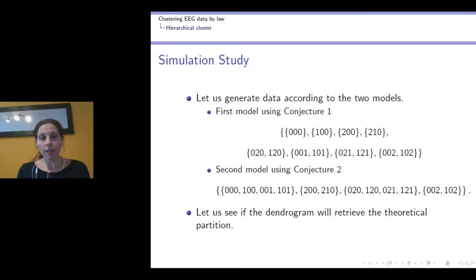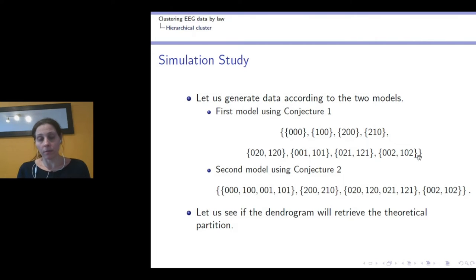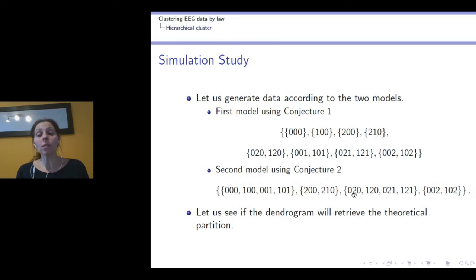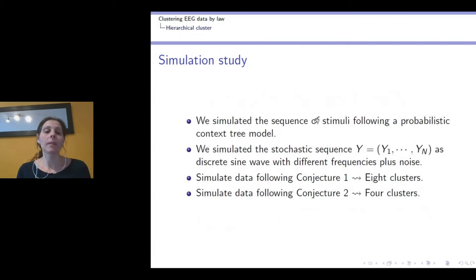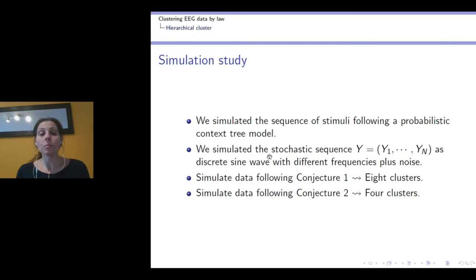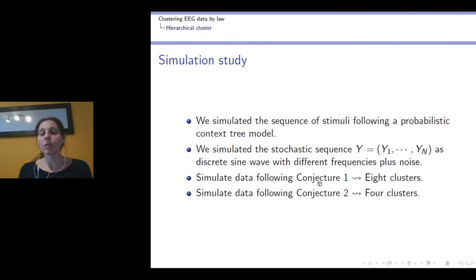We will now proceed to simulations. We will generate data under conjecture 1 — following the eight-cluster partition — and under conjecture 2 — following the four-cluster partition — and check whether in each case we are able to retrieve the model that generated the data. We simulate sequences of stimuli following a probabilistic context tree model, and then simulate a continuous stochastic sequence accordingly.